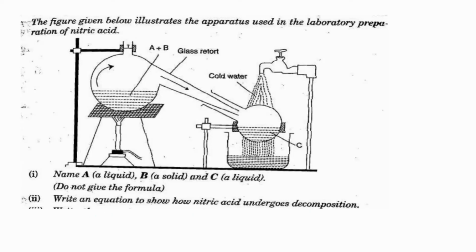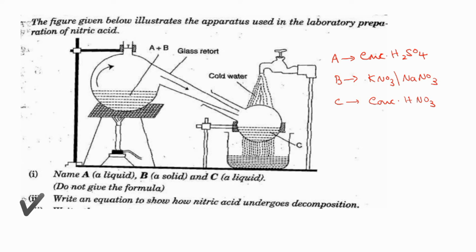Here is a board question related to the laboratory preparation of nitric acid. They ask: name liquid A — that is concentrated H2SO4. Which is solid B? It can be either potassium nitrate or sodium nitrate. Which is liquid C? That is concentrated nitric acid. Write an equation to show how nitric acid undergoes decomposition reaction. We discussed that: when exposed to sunlight, nitric acid decomposes to form nitrogen dioxide, water, and oxygen. You can try balancing that equation by yourself.